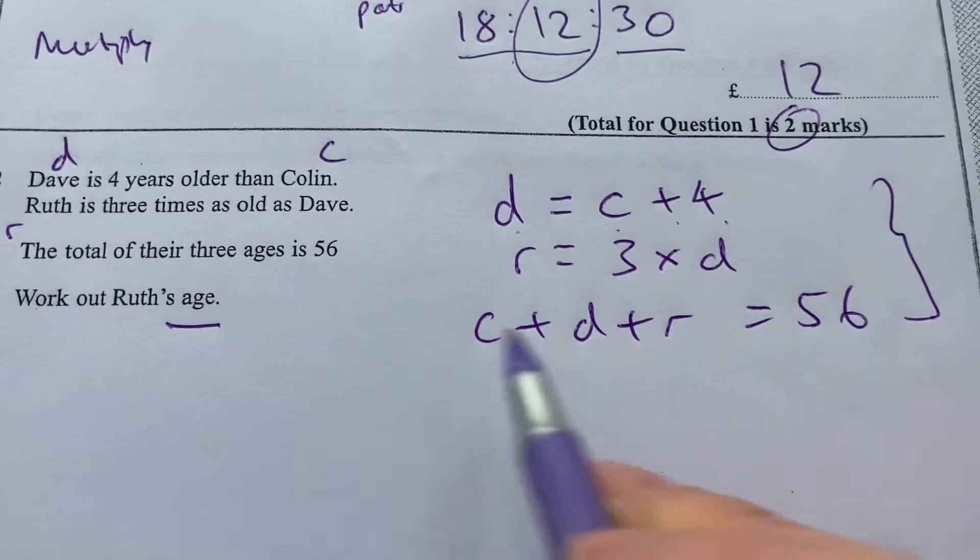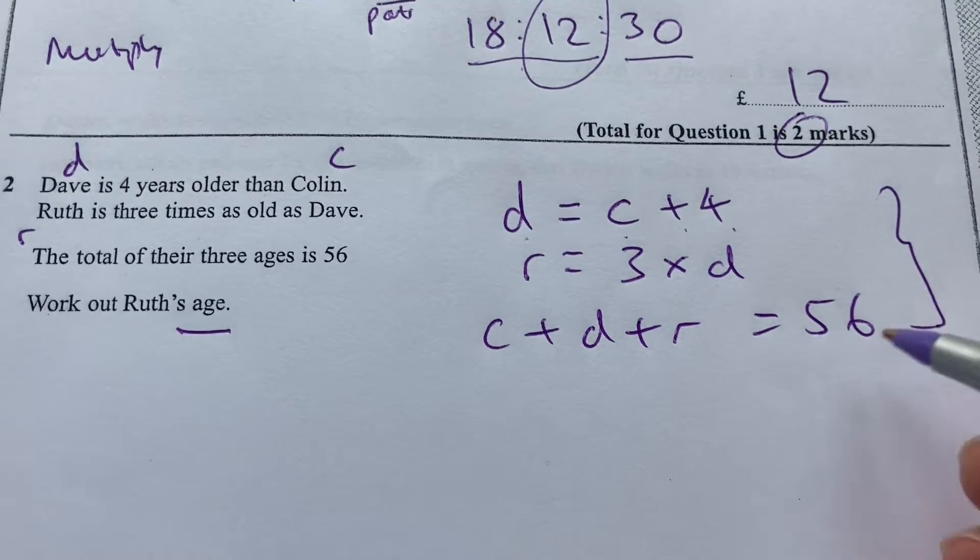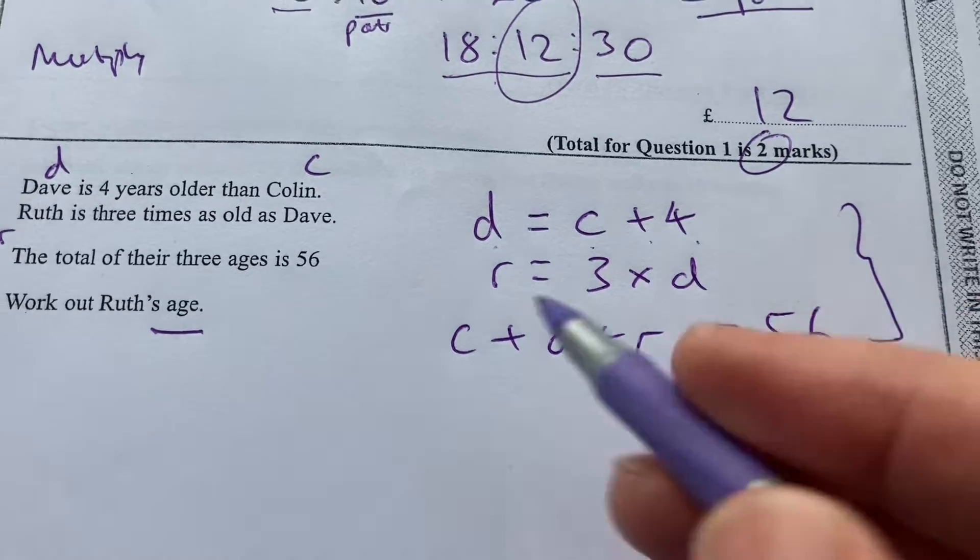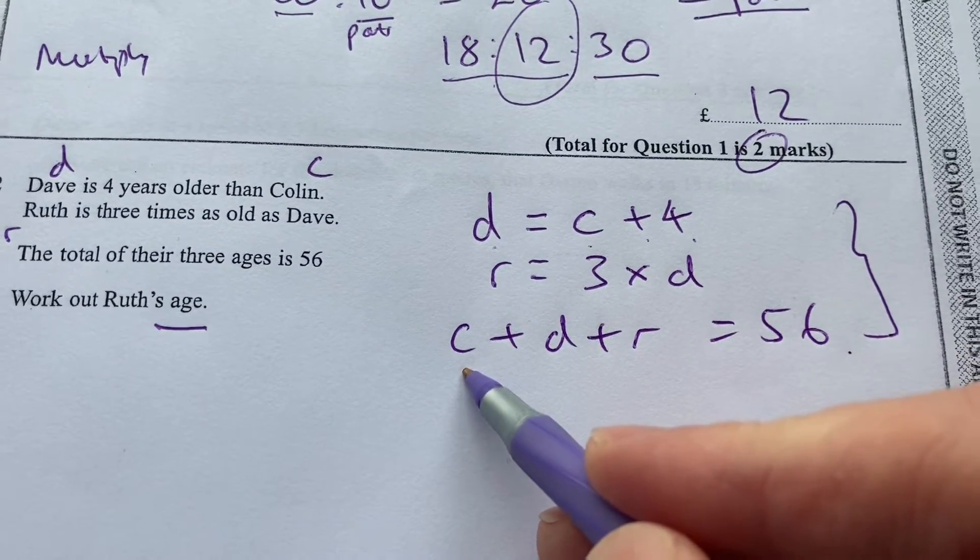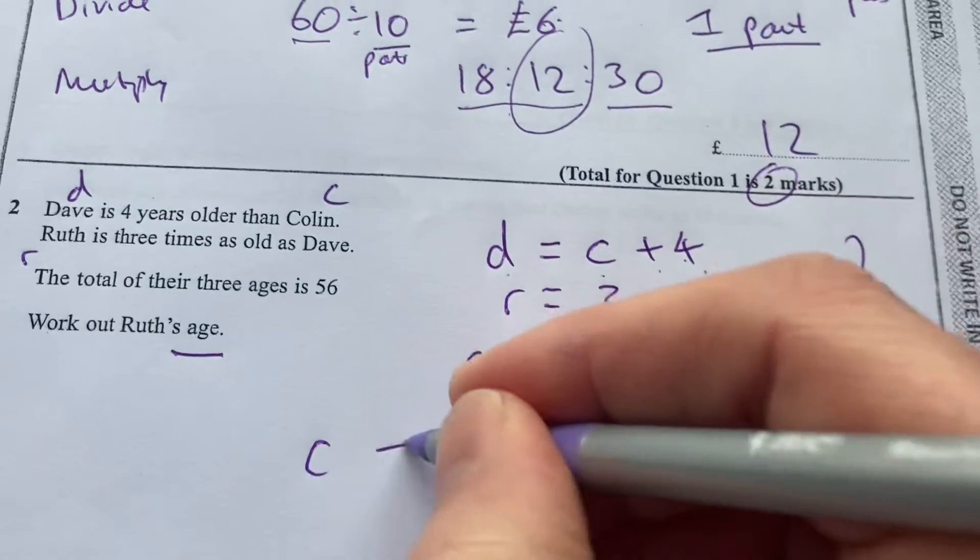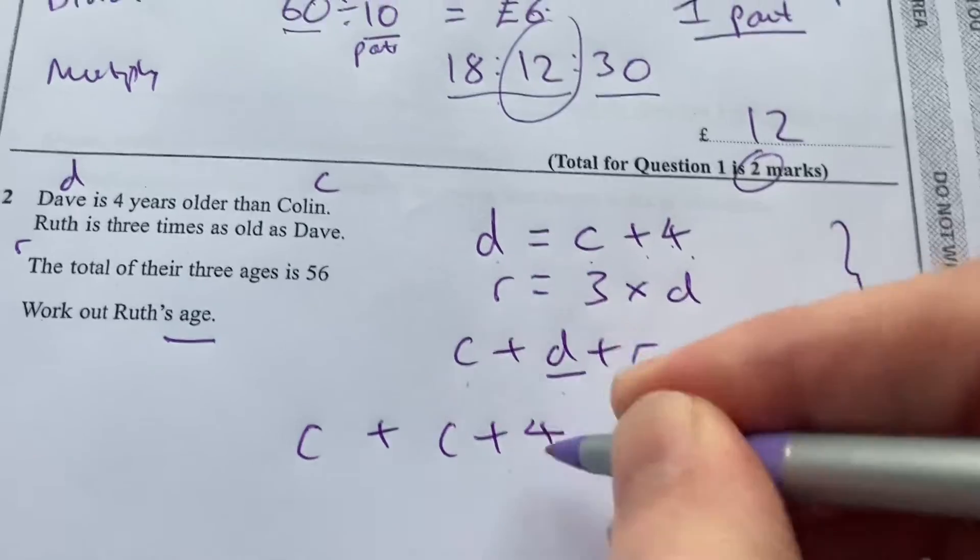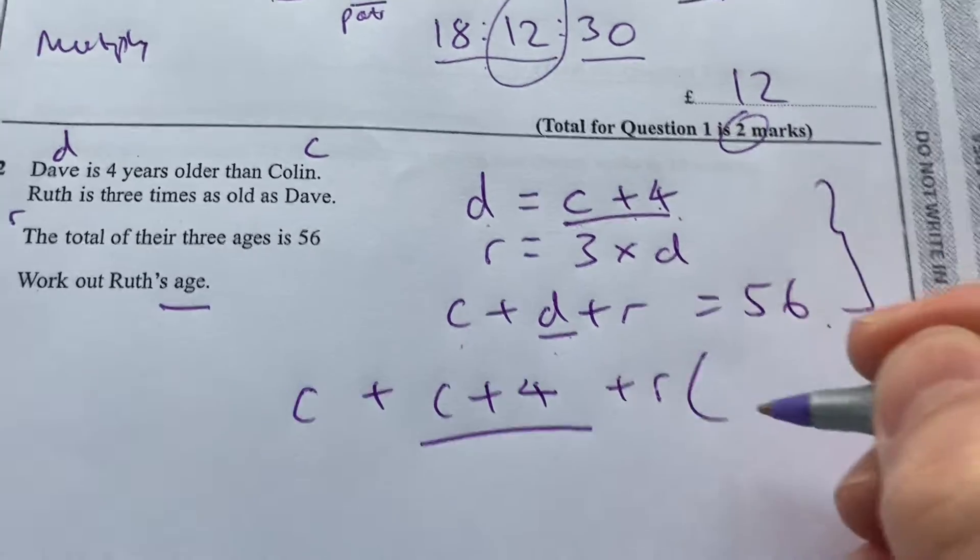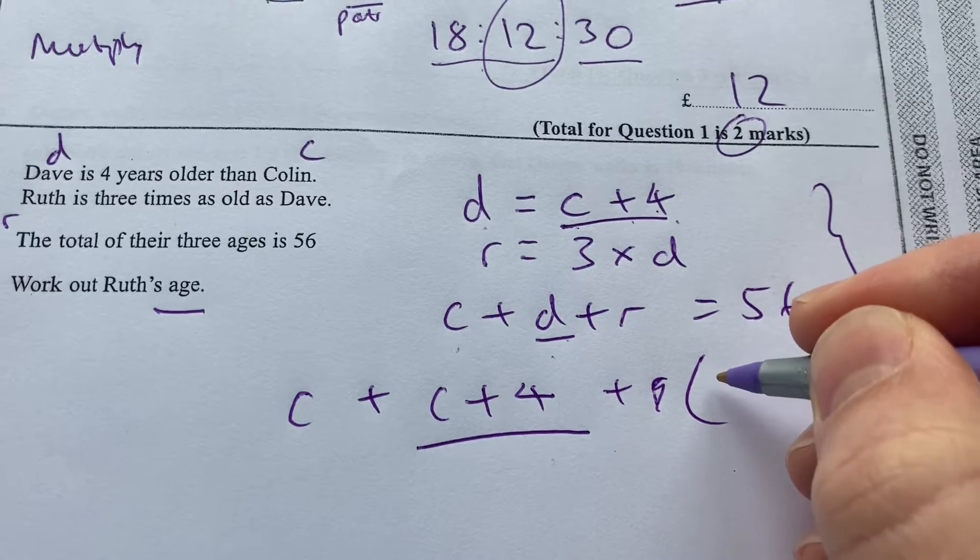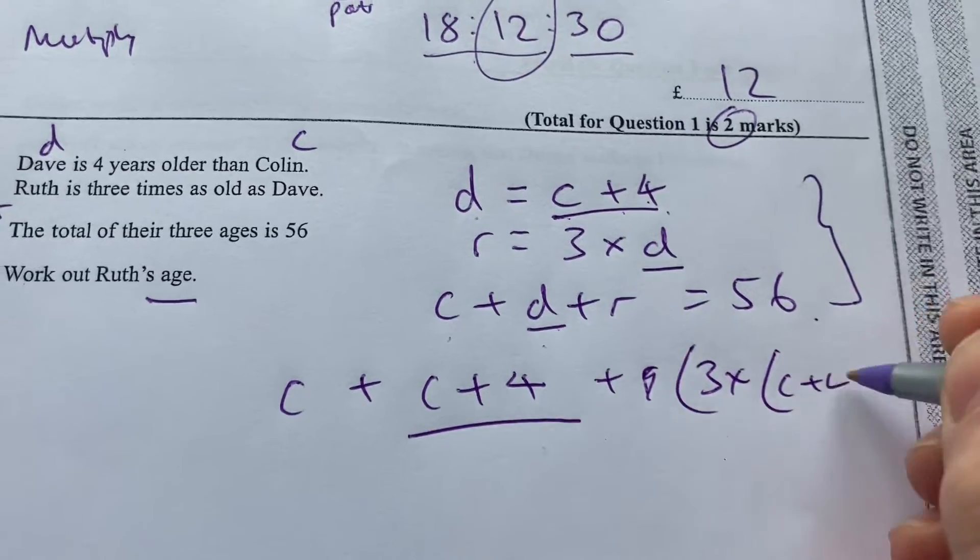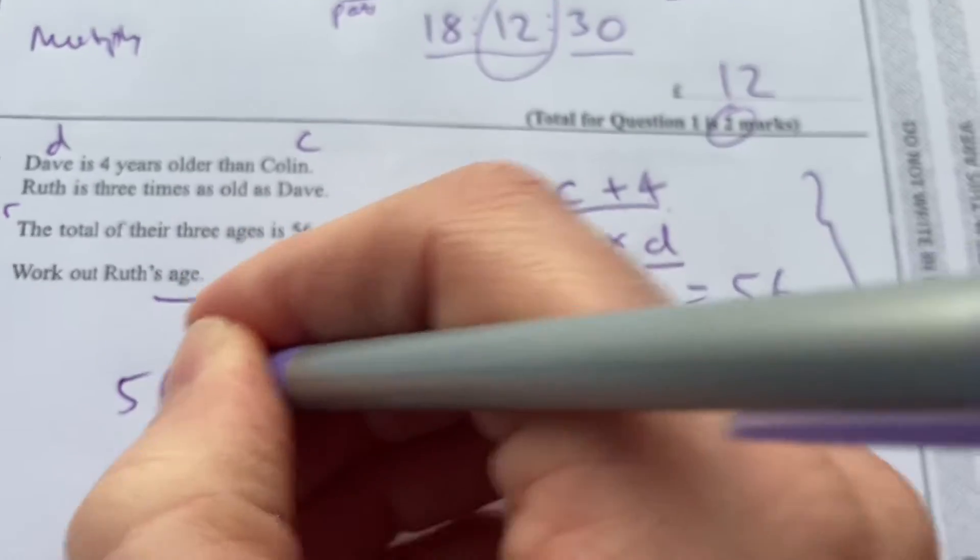If I've only got one total equation, one equation with the total, I only want one unknown. So I'm going to replace the D with C plus 4. So C plus C plus 4. That's that one there. And now I'm going to replace the R with three times, and I have to replace that D as well, C plus 4. And that's going to be 56.